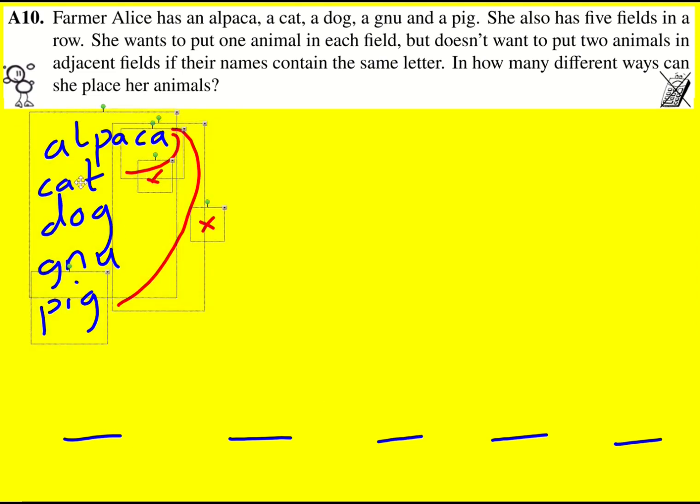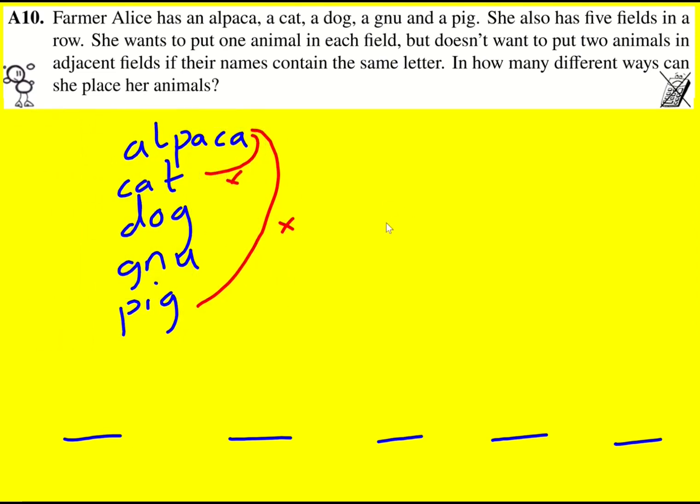Now the cat, we've already dealt with the alpaca. It can't be with that one. It can be with a dog and a gnu or a pig, in fact. So it's just the alpaca that it can't be next to.